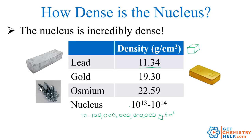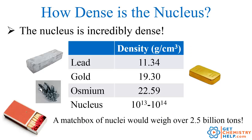It is just insanely dense because there is so much matter occupying such a tiny volume. In fact, if you were to collect a few nuclei and put them in something as small as a matchbox, the nuclei are so dense it would weigh two and a half billion tons — about as much as a billion cars. You've crammed so much mass into such a tiny volume.